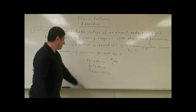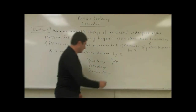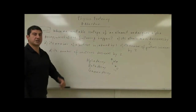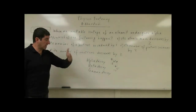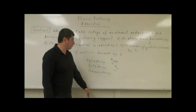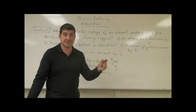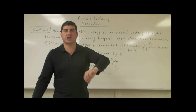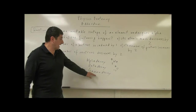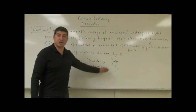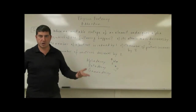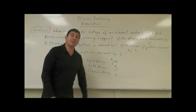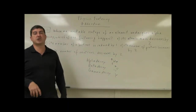Beta decay is the emission of an electron (e, charge -1, mass 0). What happens is one of the extra neutrons in the nucleus of the unstable isotope turns into a proton, and it also emits an electron. Gamma decay is the emission of a gamma ray, which is an electromagnetic wave, so nothing happens to the charge of the original isotope undergoing this decay.